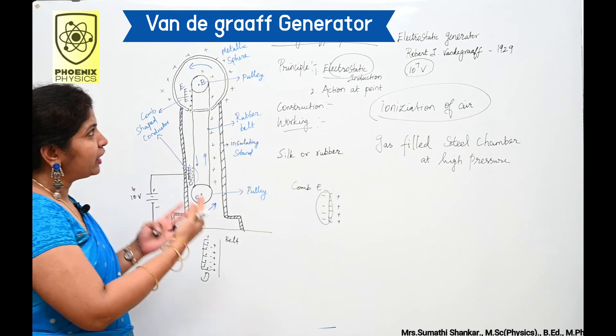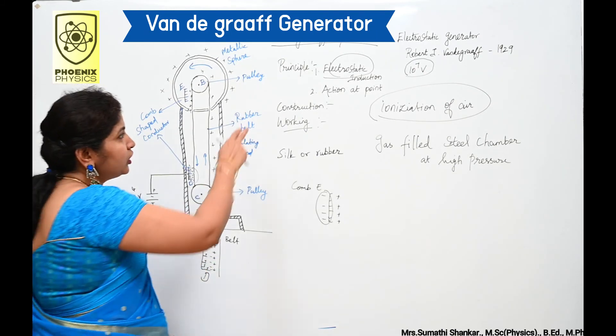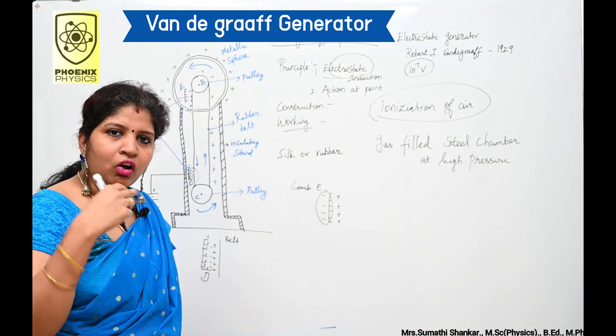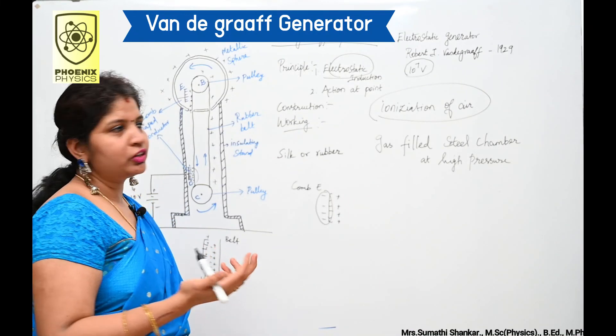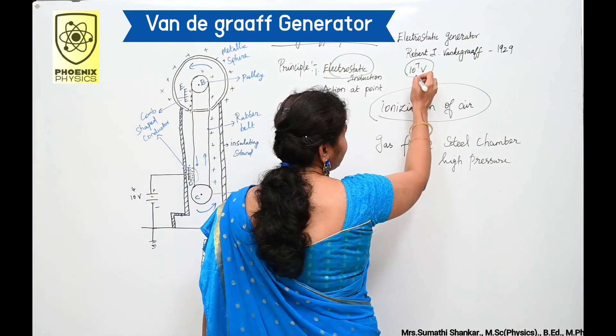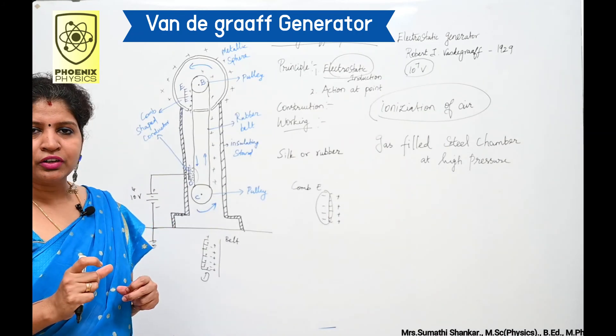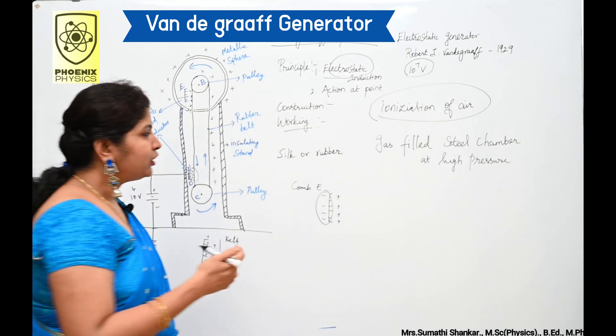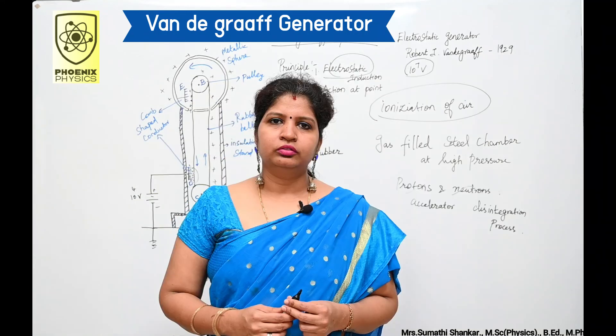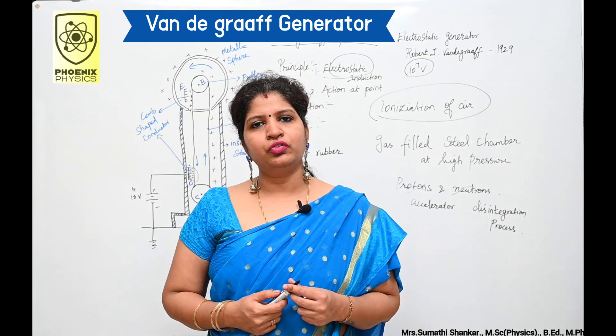What is the use of this Van de Graaff generator? This generator produces a large amount of potential difference up to 10 to the power of 7 volts. It is used to accelerate positive ions for nuclear disintegration and other applications. I hope this video is useful to you.